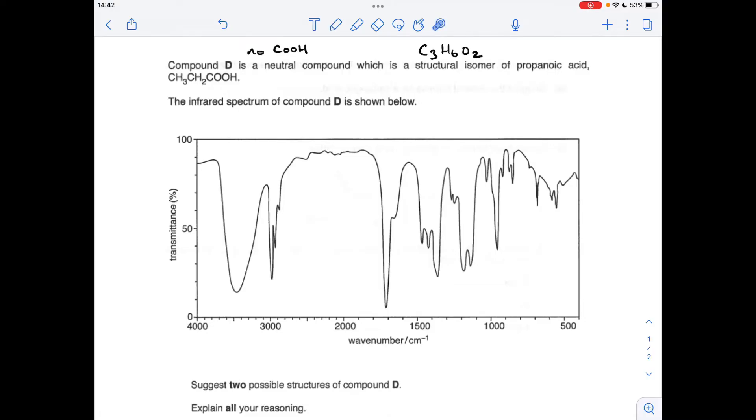There's two key areas I always look at, first around about the 3000 to see if we've got any OH absorptions. We can see this one here is in the right range, the correct range for the OH of an alcohol, so I'm just going to annotate that.